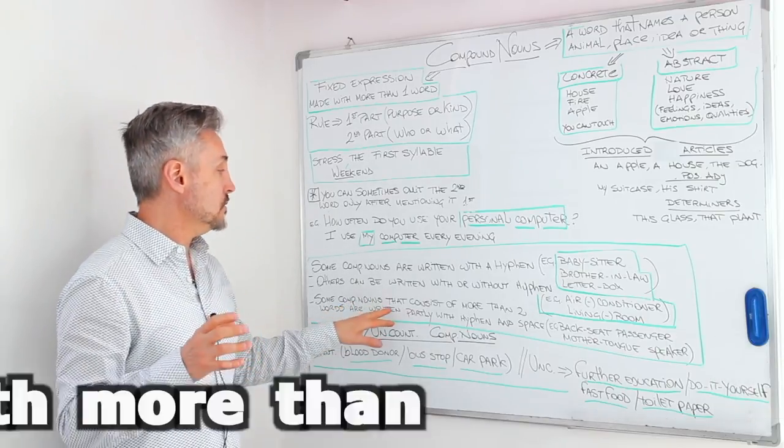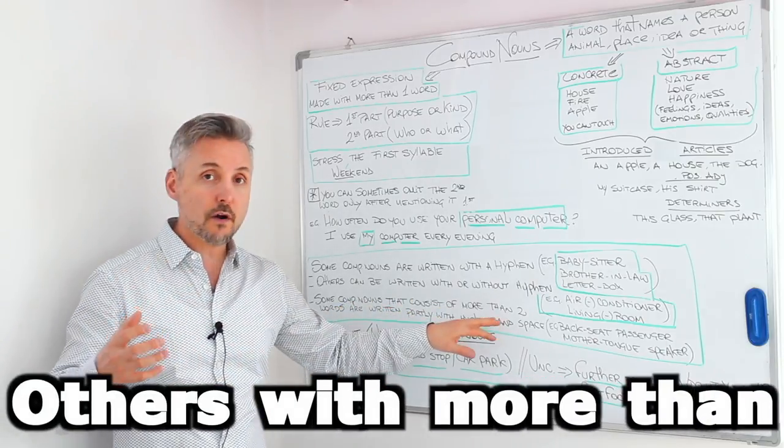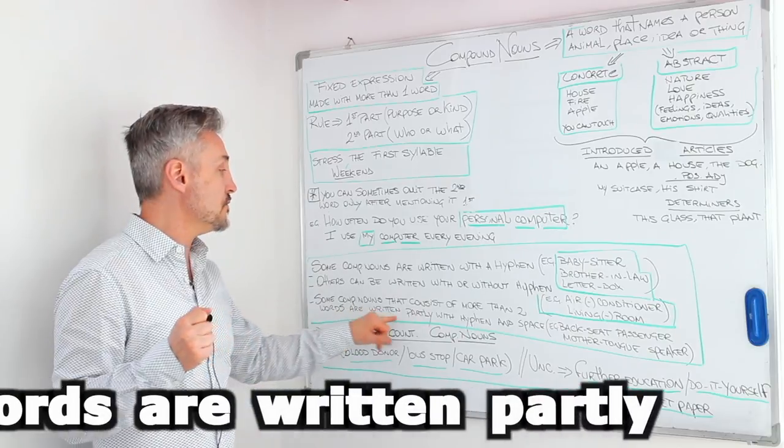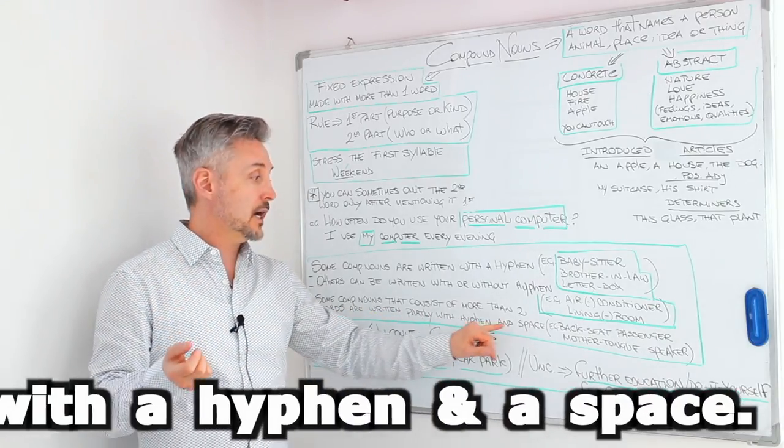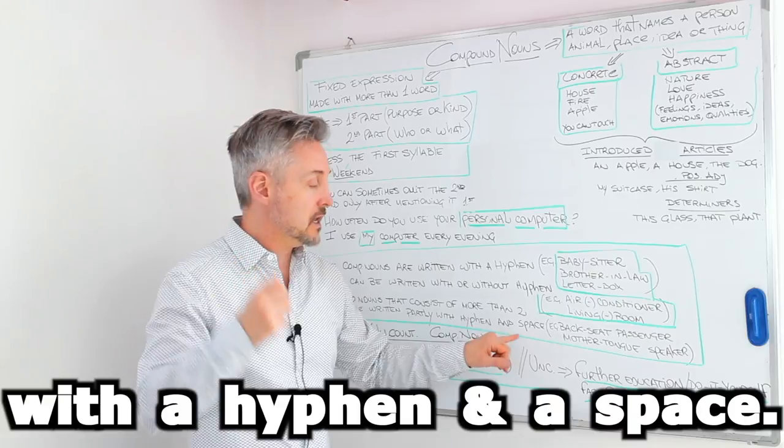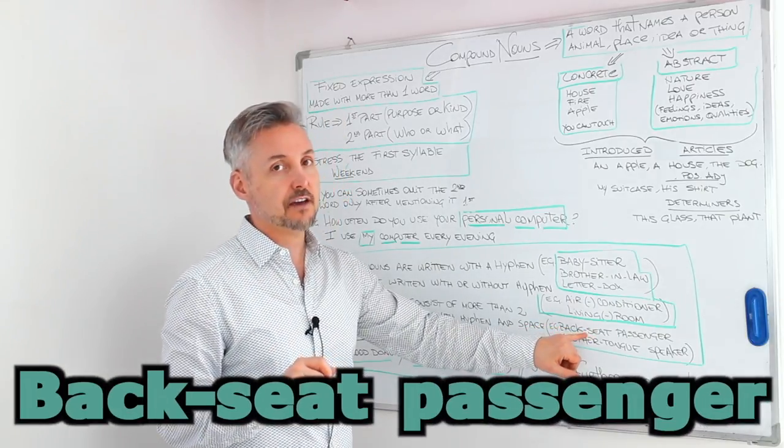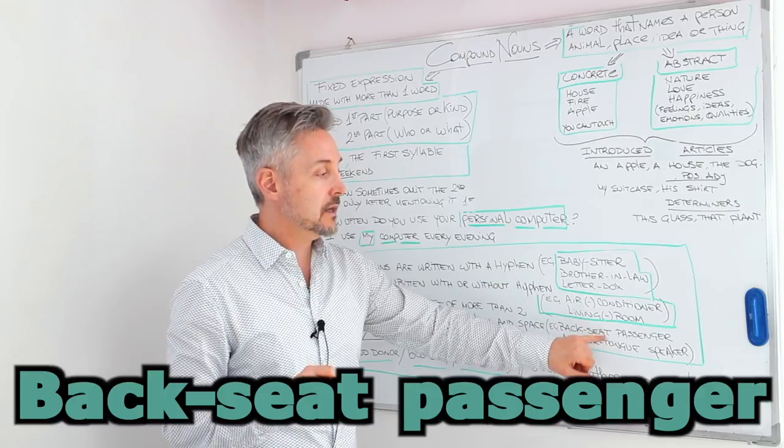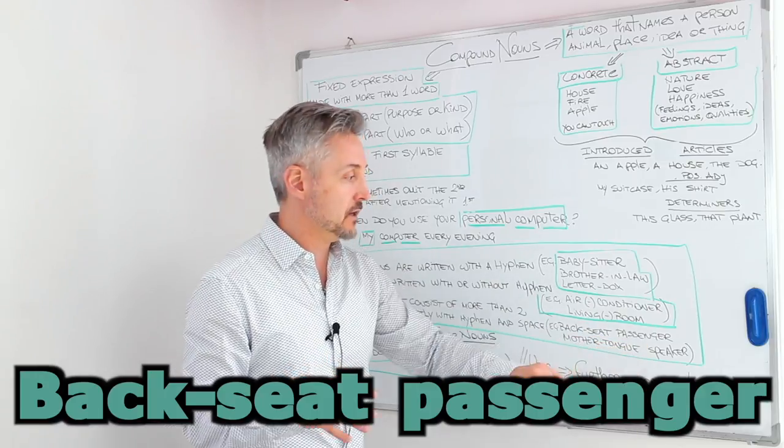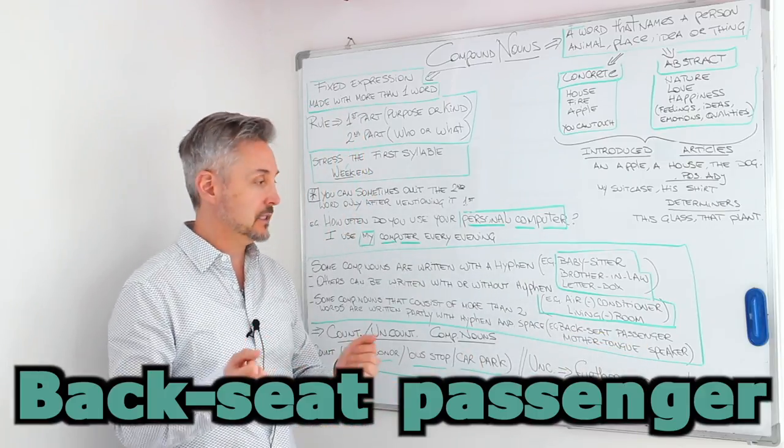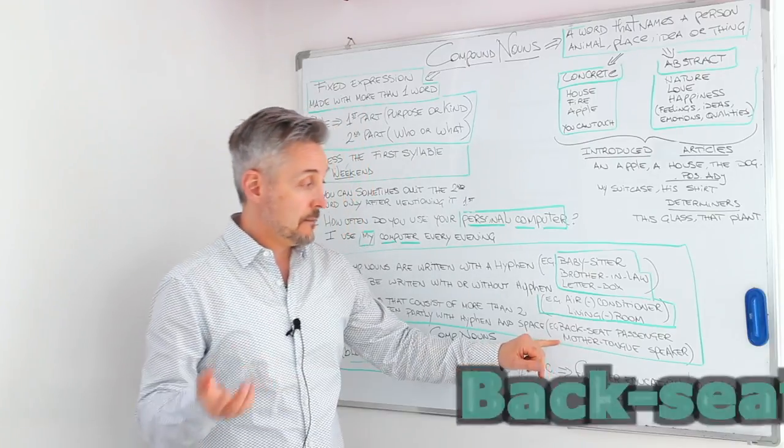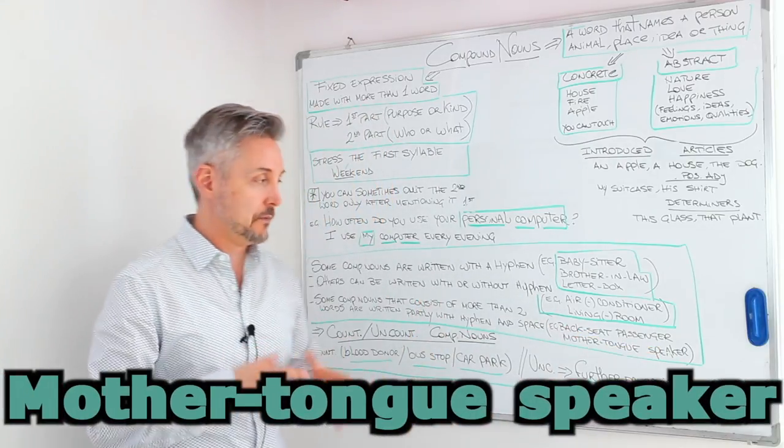Some compounds that consist of more than two words are written partly with a hyphen and a space. For example, back seat. And here we have a hyphen. Back seat passenger. No hyphen. We just add a space. Mother tongue speaker, for example.